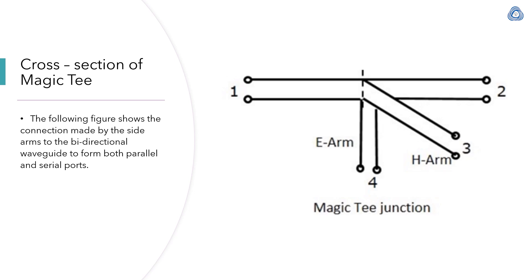If you study the cross section of magic T, this is port 1 collinear arm, port 2 collinear arm, E arm and H arm.